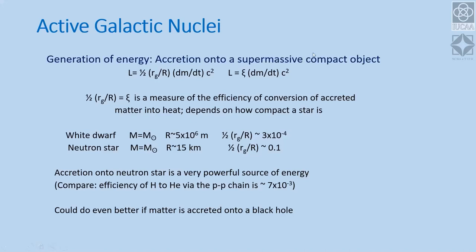Defining efficiency η = (1/2)(r_g/r), where r_g = 2GM/c², if we look at a white dwarf with radius of several thousand kilometers, we get an efficiency of about 3 × 10^-4. Nuclear processes in the Sun give about 0.007, which is higher. But if you make the object more compact, like a neutron star with radius about 10 kilometers, then η = (1/2)(r_g/r) ≈ 0.1 — a very efficient process for extraction of gravitational potential energy.